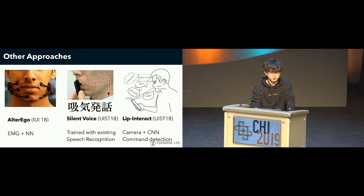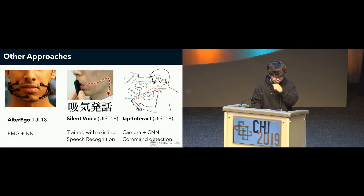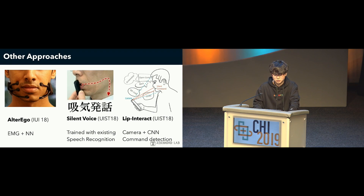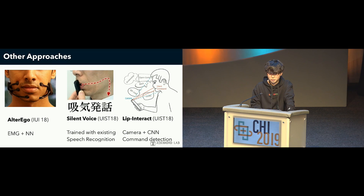Various approaches have been used for silent speech so far. For example, AlterEgo uses electromyography to estimate internal voice; however, this can be termed command detection rather than speech, using gesture recognition around the mouth. Silent Voice uses ingressive speech and allows speech recognition with a silent voice, but it requires the user to hold a device in front of their mouth and requires special skills. Lip Interact tracks the user's lips with the front camera of a mobile device and guesses commands through a convolutional neural network, but you have to locate a camera at a distance from the front of your face, relying on the user's hand.